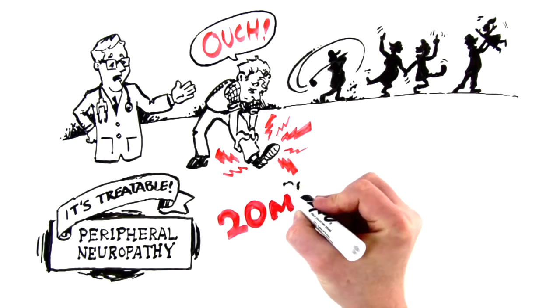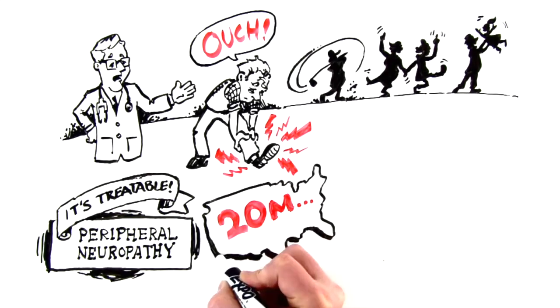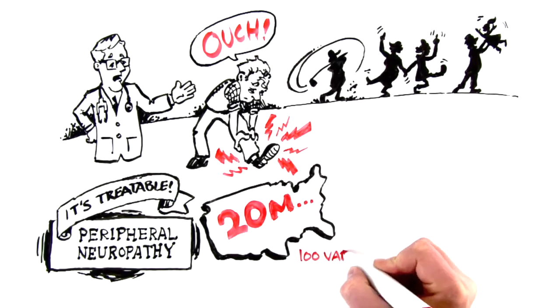Believe it or not, more than 20 million Americans live with peripheral neuropathy. It's common, and there are over 100 different variations of the condition.